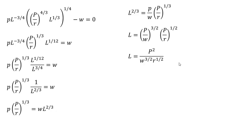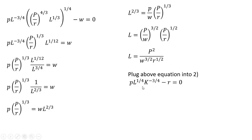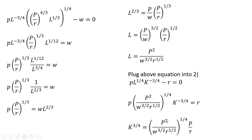The next step is to get the input demand function for capital K. We're going to take this equation and plug it into equation 2, which was the partial derivative of the profit function with respect to capital. Where we see L in equation 2, we're going to plug in this right-hand side. Making that substitution and simplifying. I divided everything through by R, so now I've got P divided by R, and I multiplied both sides by K to the 3/4 power.